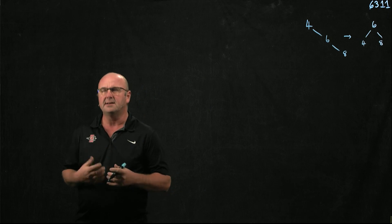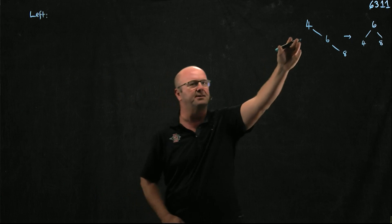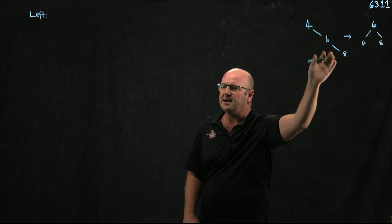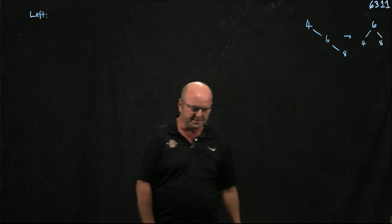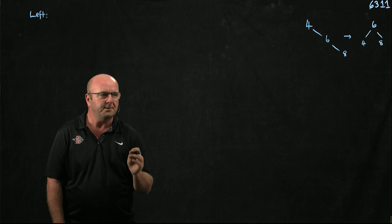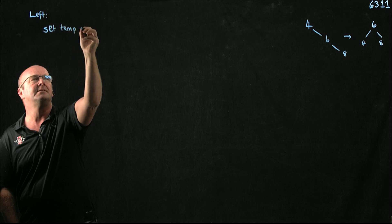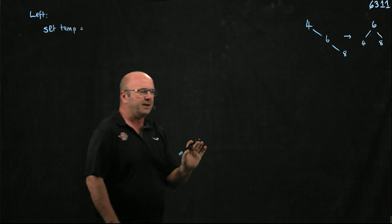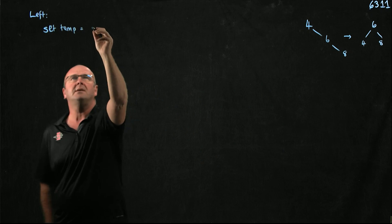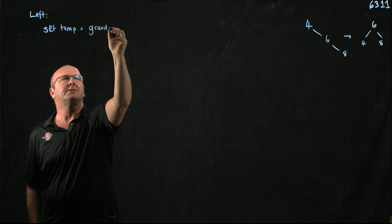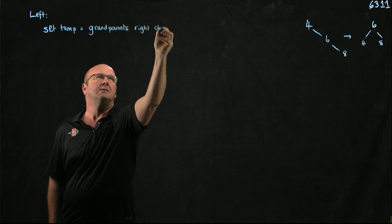The way we do a left rotation is we start with a grandparent node, then we manipulate the grandparent's right child. We're going to have a temporary pointer, and the first thing we do is set the temporary node to the grandparent's right child.